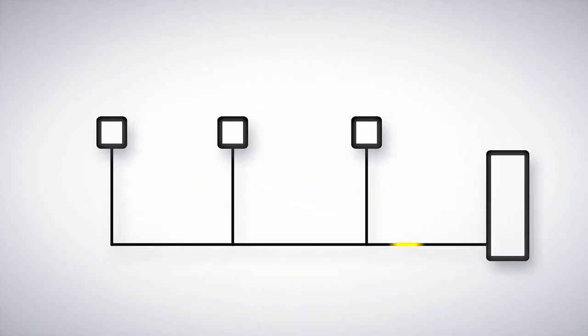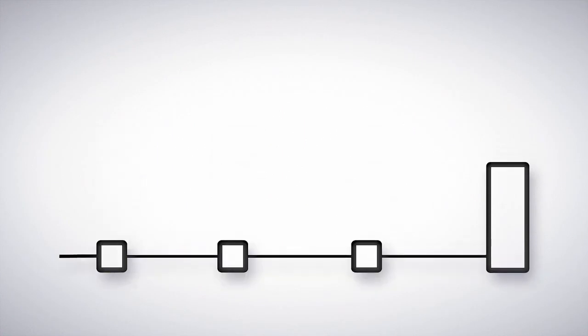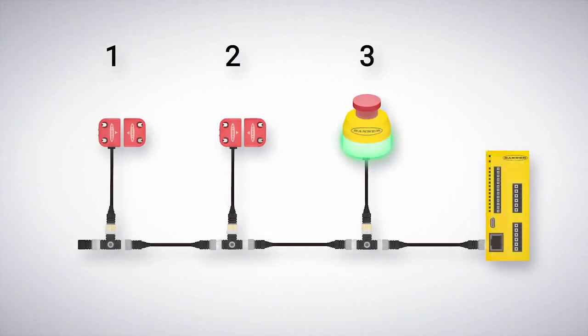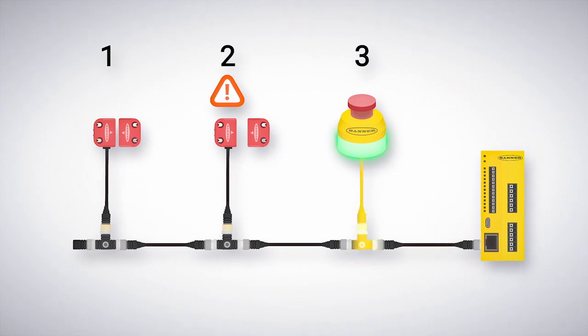In-series diagnostics allows you to connect up to 32 devices with one in-series connection to any PLC or Banner-built safety controller. When a safety event occurs, the system receives an alert that includes information about which safety device tripped, making troubleshooting a breeze.